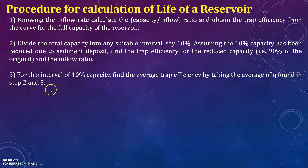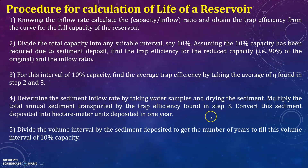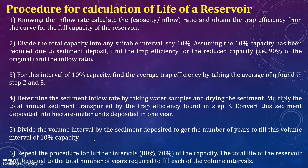Next, determine the sediment inflow rate by taking water samples. Multiply the total annual sediment transported by the trap efficiency found in step 3. Convert the sediment deposited into hectare meter units deposited in one year. Divide the volume interval by the sediment deposited to get the number of years to fill this volume interval of 10 percent capacity. Repeat the procedure for further intervals — 80 percent, 70 percent, 60 percent of capacity. The total life of the reservoir equals the total number of years required to fill each volume interval.